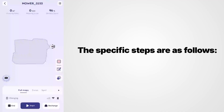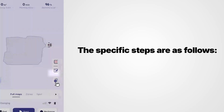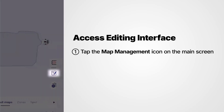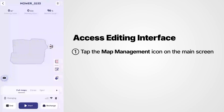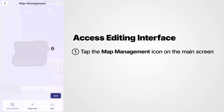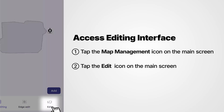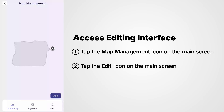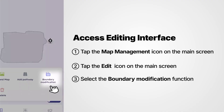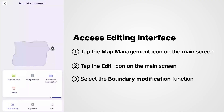The specific steps are as follows. Tap the Map Management icon on the main screen. Tap the Edit icon on the main screen. Select the Boundary Modification function.